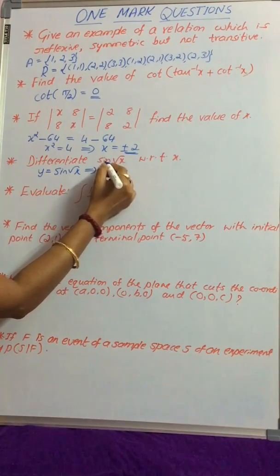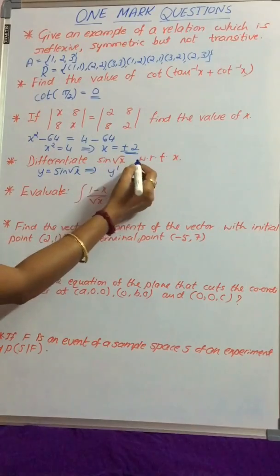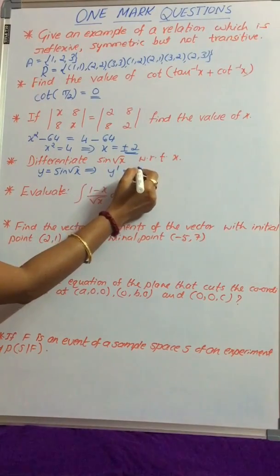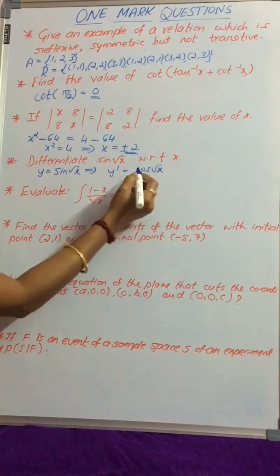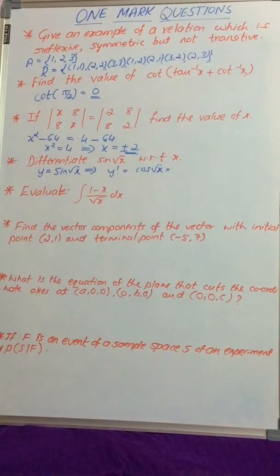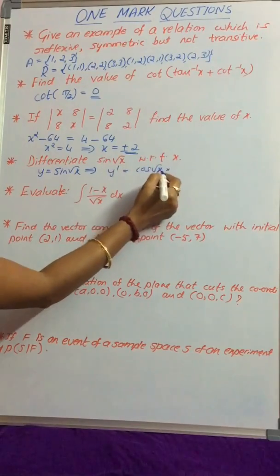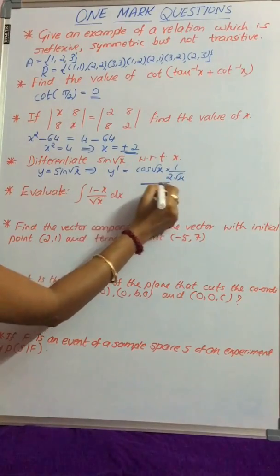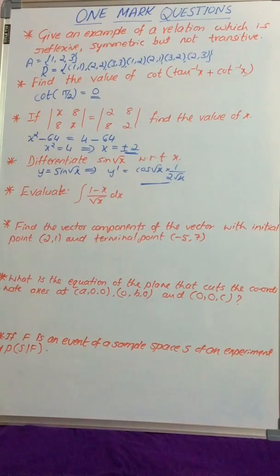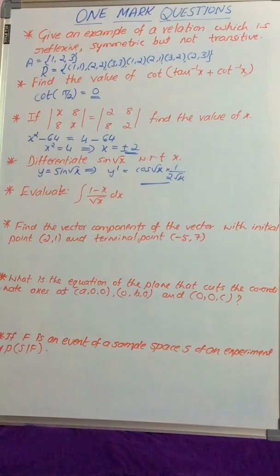The given function is sin(√x), so it is a composite function. The derivative is cos(√x) times, by using chain rule, the derivative of √x, which is 1/(2√x). Therefore, y' = cos(√x)/(2√x).